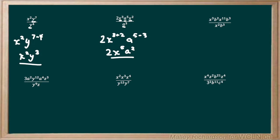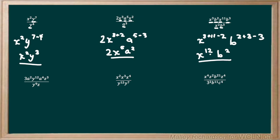Next we have x to the power of 3 times b to the power of 2 times x to the power of 11 times b to the power of 3, all over x to the power of 2 times b to the power of 3. The three x's all have the same base, and the b's all have the same base. For x, we add the top exponents and subtract the bottom: 3 plus 11 minus 2 equals 12. For b, we have 2 plus 3 minus 3, leaving us with 2. Our final answer is x to the power of 12 times b to the power of 2.